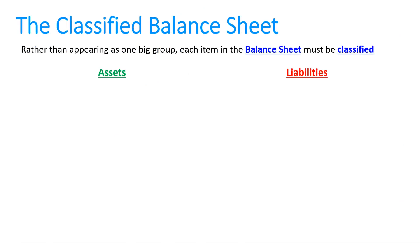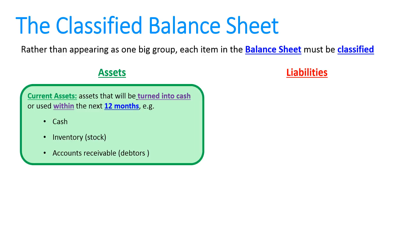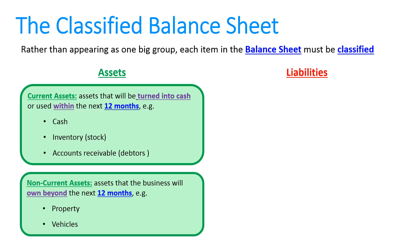So what we do — and this is what we learn in Year 12 accounting — is we classify each item in the balance sheet. Assets are split into current assets, those that will be turned into cash or used up within the next 12 months, with examples like cash, inventory, and debtors, and non-current assets, which the business will own beyond 12 months, for example property and vehicles.